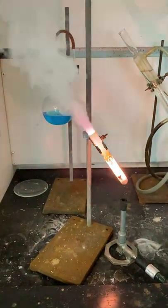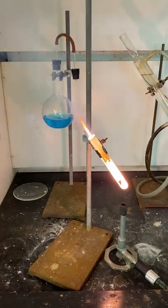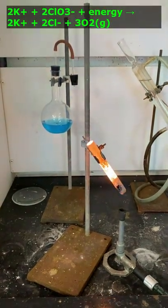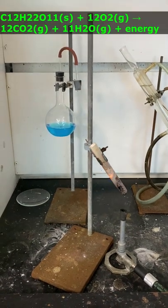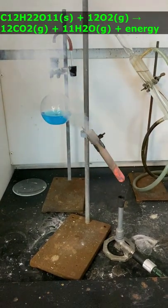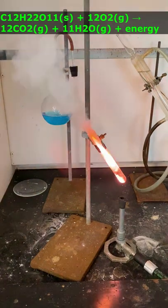So what happened? The molten potassium chlorate decomposed, liberating oxygen. The sugar present in the Swedish fish underwent rapid oxidation, or reacted with the oxygen, forming carbon dioxide and water.